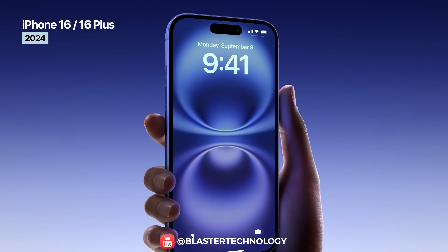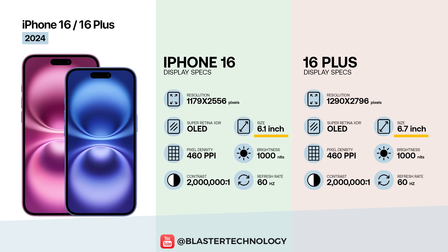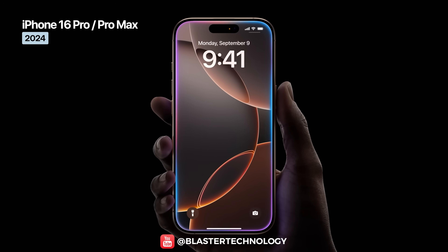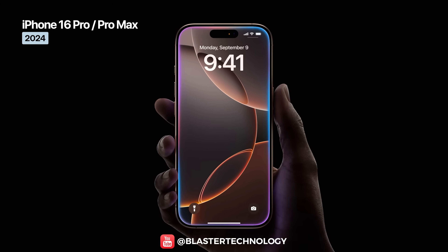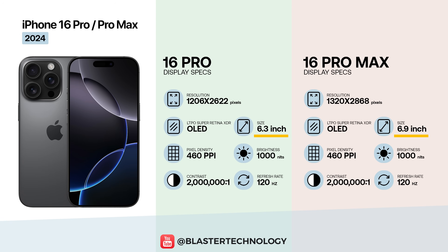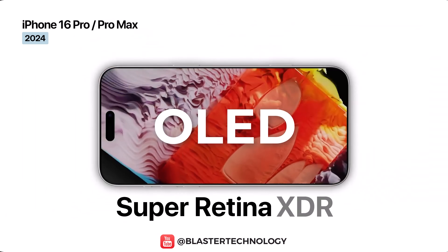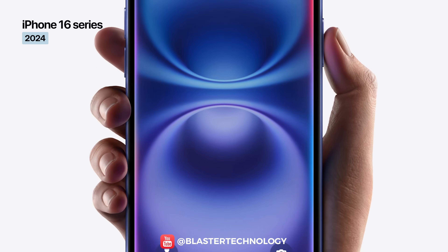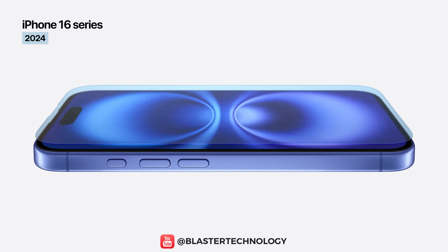The iPhone 16 and 16 Plus keep the same display sizes and the same 60 Hz Super Retina XDR OLED panel with practically infinite contrast. Brightness remains at 1000 nits typical, 1600 nits HDR, and up to 2000 nits outdoors. The iPhone 16 Pro and 16 Pro Max increase their screen sizes for the first time to 6.3 and 6.9 inches, using Super Retina XDR OLED displays with Adaptive ProMotion up to 120 Hz, and the series adopts the thinnest bezels to date along with Ceramic Shield protection.